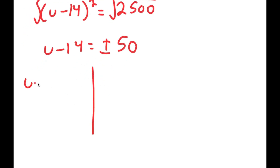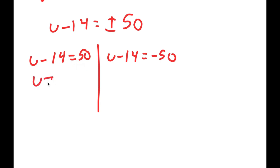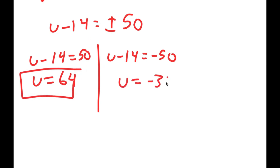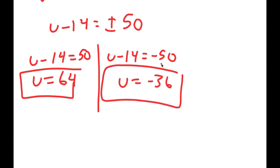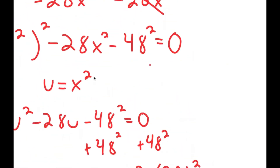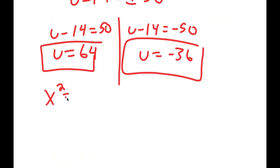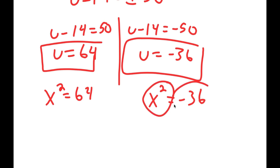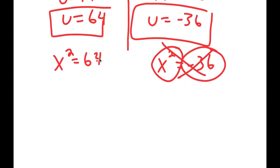So we get two equations: u minus 14 equals positive 50, giving u equals 64; and u minus 14 equals negative 50, giving u equals negative 36. Since u equals x squared, this means x squared equals 64 or x squared equals negative 36. We can't have a number squared equal to a negative number in the reals, so x squared equals 64 is the only real equation. Taking the square root gives x equals positive or negative 8.